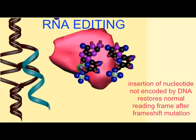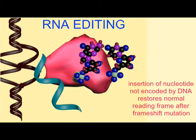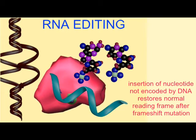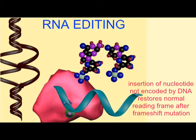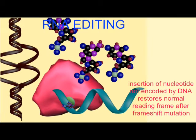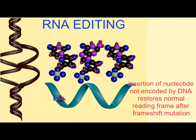One of the early proofs of this was an instance in which a frameshift mutation had rendered an RNA useless, but nucleotides were later inserted through RNA editing so that normal function was restored. This was not programmed by the DNA.